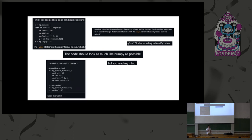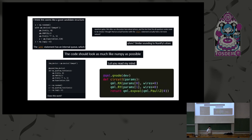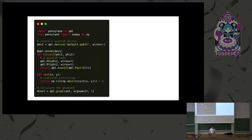So we concluded that quantum devices in this framework should just be functions that you call and compose with your classical functions. In PennyLane, all quantum circuits are functions. Within these functions you define your quantum operations. The functions take classical parameters and output measurement statistics.